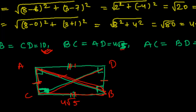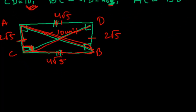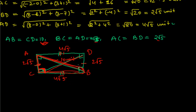So AC = BD = 2√5 and BC = AD = 4√5. To confirm a right angle using the Pythagorean theorem: hypotenuse² = perpendicular² + base². The hypotenuse here is AB = 10, so AB² should equal AC² + BC². Let's verify this.